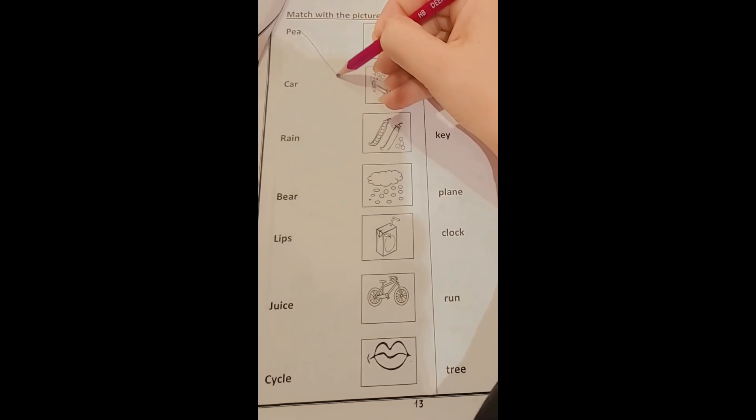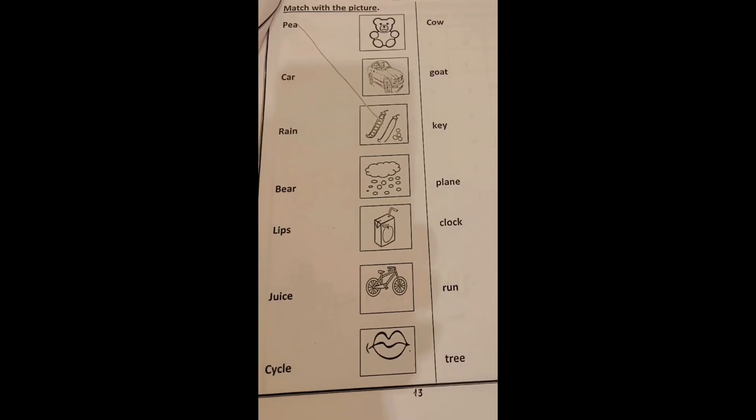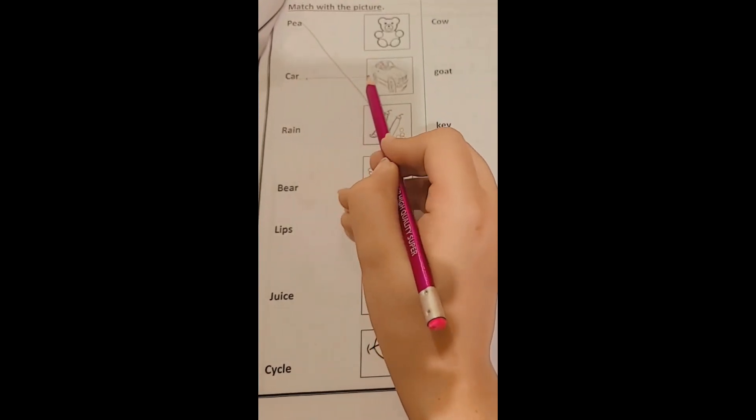So, match peace with the picture. The second word is car. See the car. So, where is the car? Here? No. Here is the car. So, match it with this. Yes.